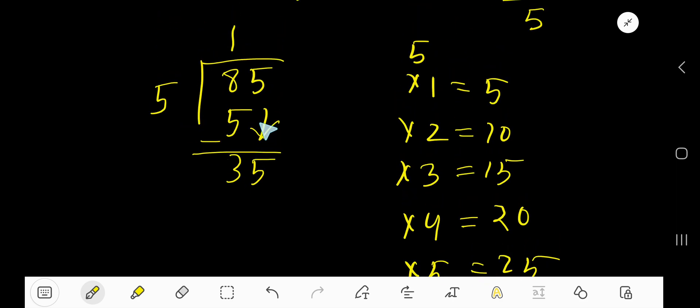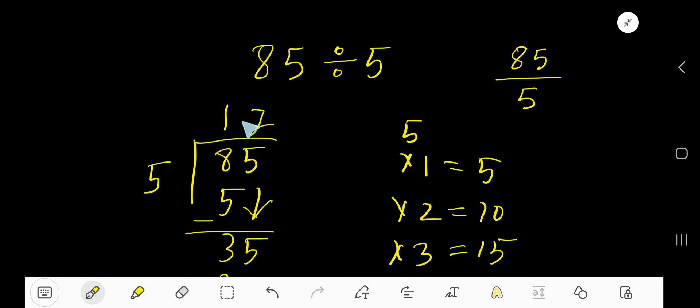5 goes into 35 seven times. 7 times 5 is 35. If you subtract, you're getting 0. So 17 is the answer.